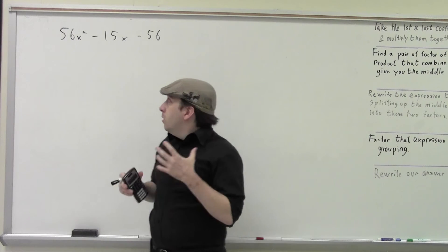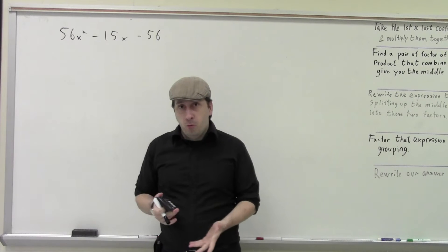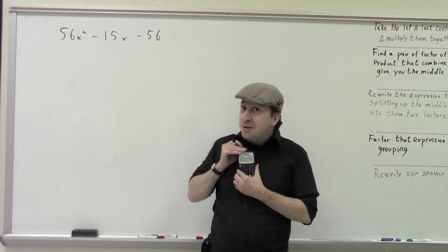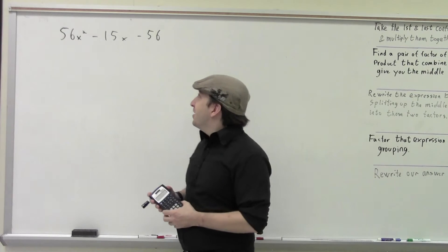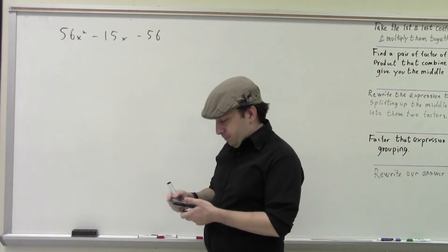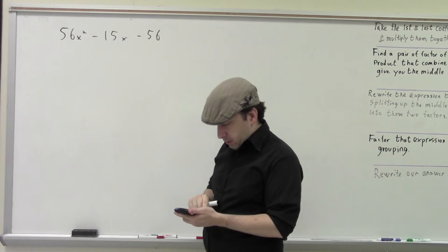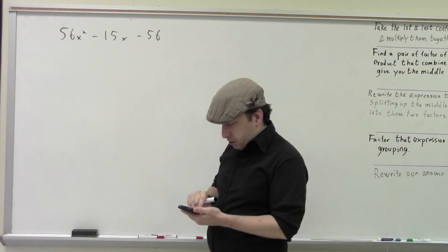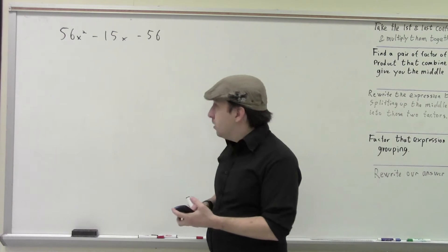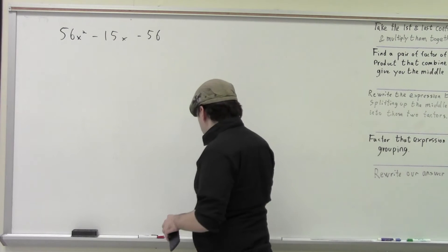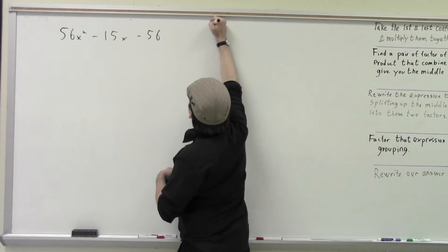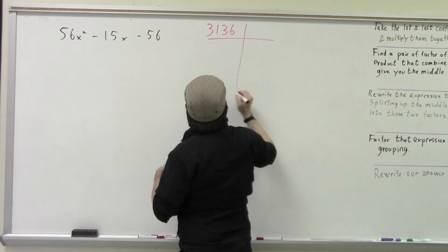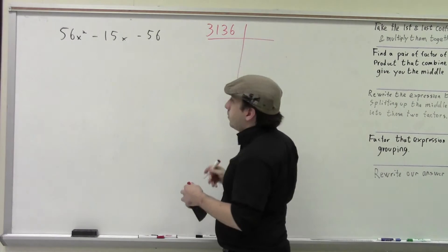We want to proceed like normal here. We're going to start by using our calculator to multiply the first and last terms together. So we're going to do 56 times 56. We get a very, very big number — it is 3136.